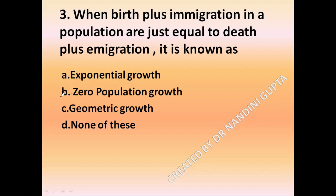The answer is zero population growth. When birth plus immigration equals death plus immigration, it is known as zero population growth. Zero population growth is the correct answer.